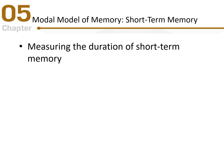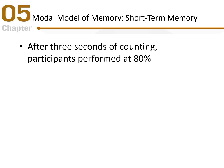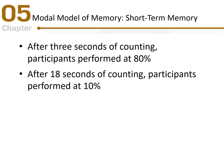To measure the duration of short-term memory, participants were asked to read three letters and a number, then count backward by threes, and after a set time, recall the three letters. After three seconds of counting, performance was about 80 percent. After 18 seconds, performance dropped to about 10 percent — a 70 percent reduction in performance between the three-second and 18-second marks.